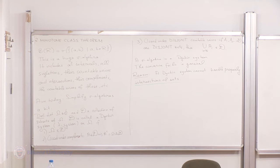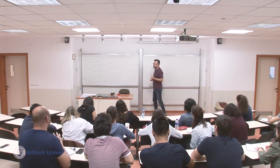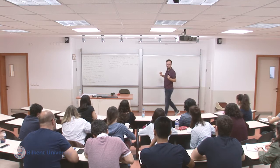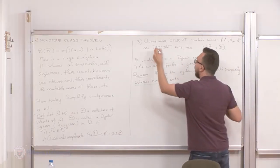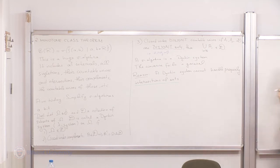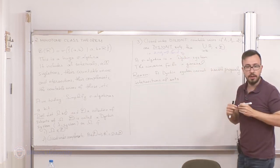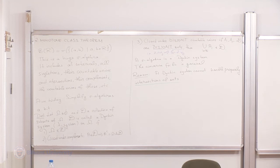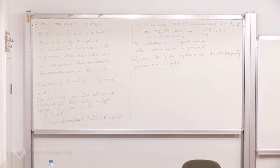Disjoint sets means take any two of those sets — they are disjoint pairwise. A_i intersection A_j is empty for all i, j that are not equal. We're not going to say pairwise explicitly; disjoint always means this. Pick any two different sets, they are disjoint — their intersection is empty.